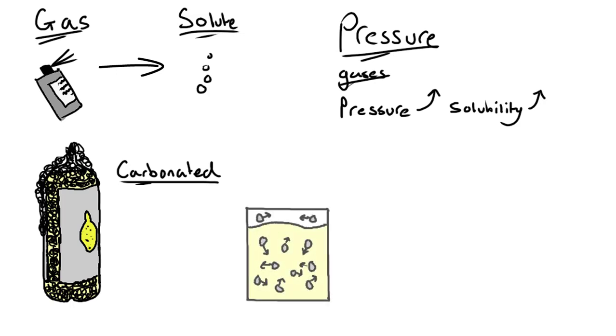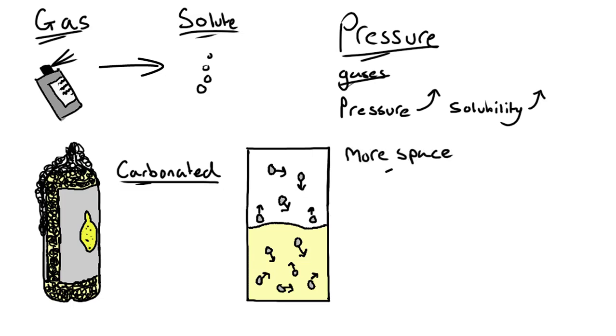To explain this, the CO2 particles can be seen to have little space above the solution to move into, or in other words, a high pressure. If we reduce the pressure by increasing the volume of space above the juice, the particles will have more space to move into, thus they come out of solution.